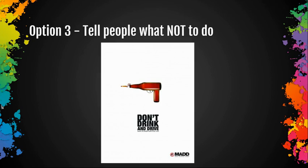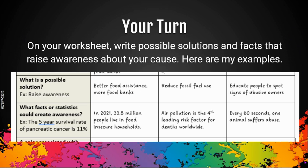Your third option — and honestly your worst option — is to tell people what not to do. Here we have beer bottles telling us not to drink and drive; the bottles have been turned into a gun. This is the worst option because telling people what not to do is usually not effective. Everybody knows you're not supposed to drink and drive, and yet people still do it. While this image is nice, it is not necessarily the most effective way to get the point across.